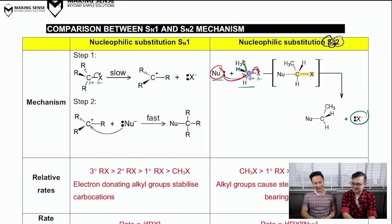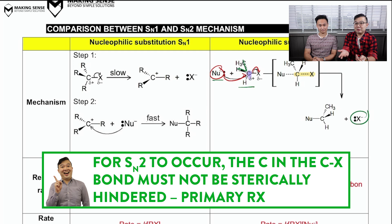Now, Mr. Long, what happens if the carbon is sterically hindered, like boarding a train at 5pm, peak period? So, definitely it's going to be very crowded, right?